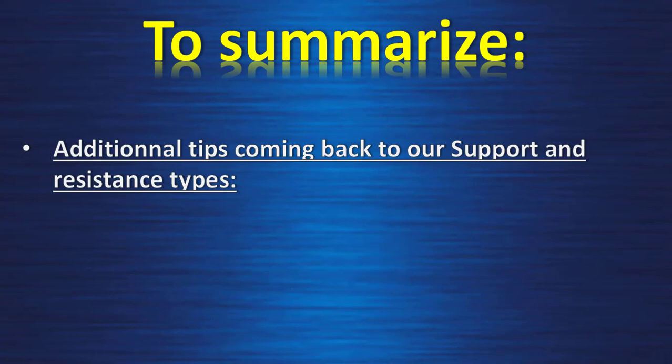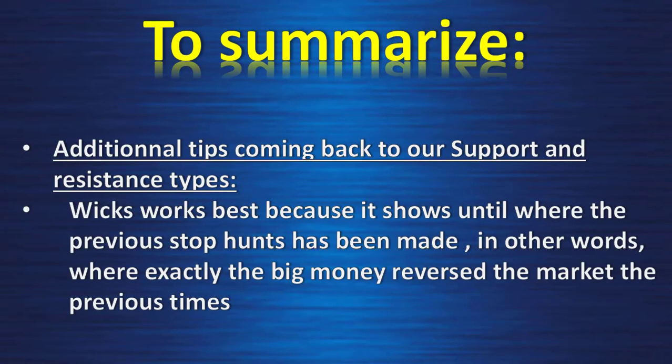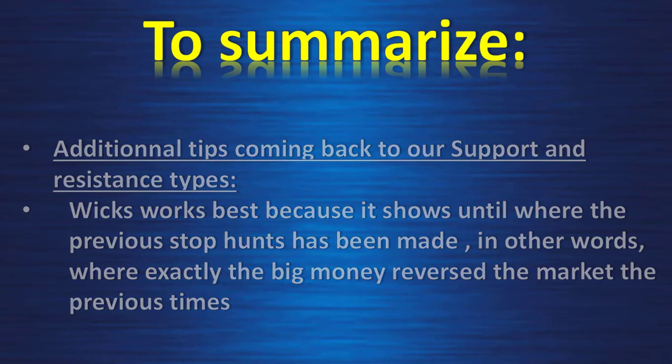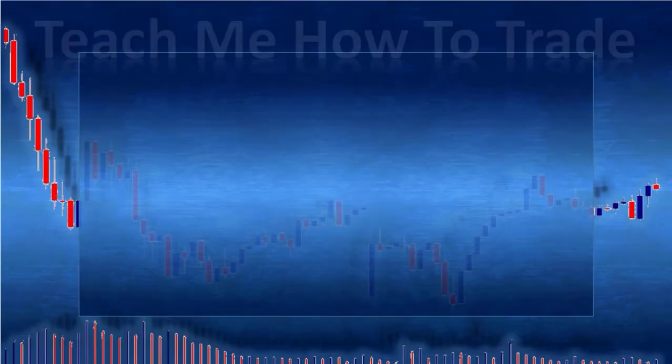Additional tips: coming back to our support and resistance types — wicks work best because they show until where the previous stop hunt has been made. In other words, where exactly the big money reversed the market the previous time.